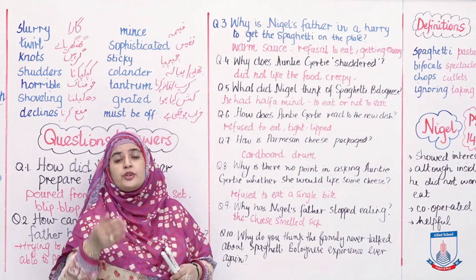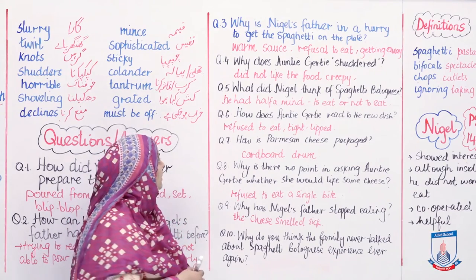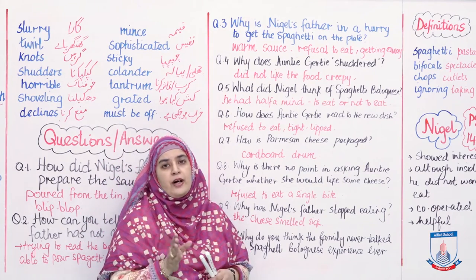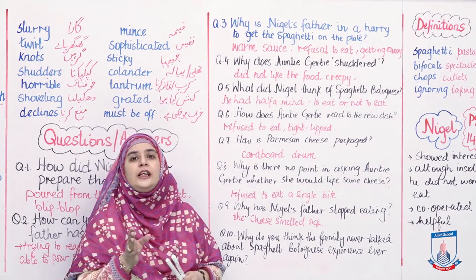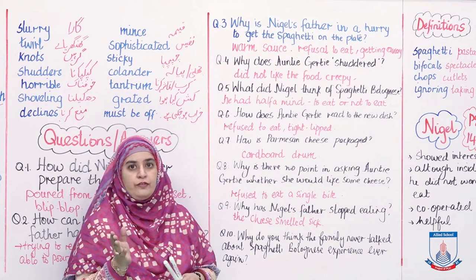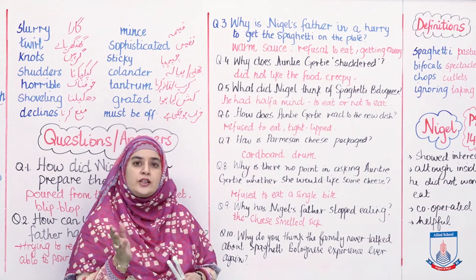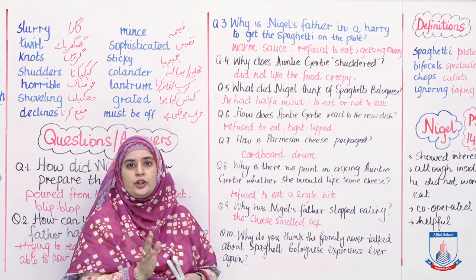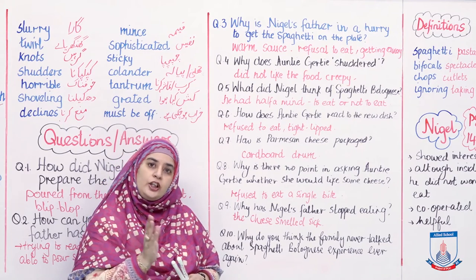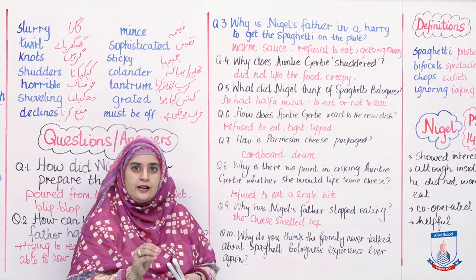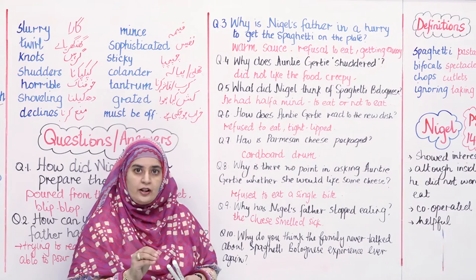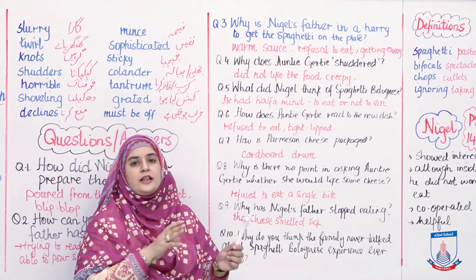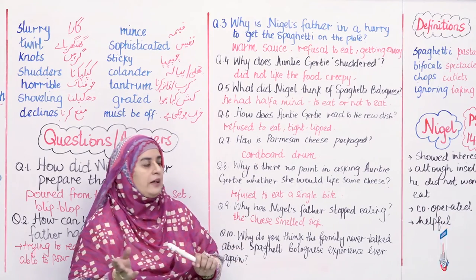What did Nigel think of spaghetti bolognese? Ab paragraph 1 aur paragraph 2 mein Nigel ki different thoughts share hui hain. As we read those thoughts, we come to know that Nigel had half a mind whether to eat or not to eat. She was actually showing a little interest, she was actually helping her father out, but she was indecisive whether this dish is going to taste good or bad.